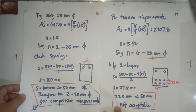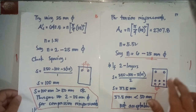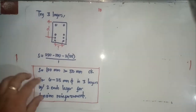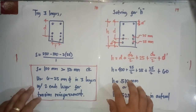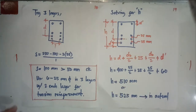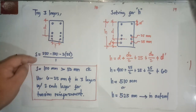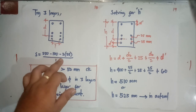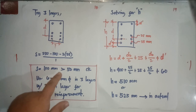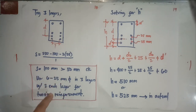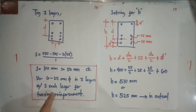Try 3 layers arrangement with 2 bars each layer - that gives 6 bars total. Check spacing: S = (250 - 100 - 25) / 1 = 100 mm, which is greater than 50 mm. Therefore use 6 × 25mm diameter bars in 3 layers with 2 bars per layer for tension reinforcement.